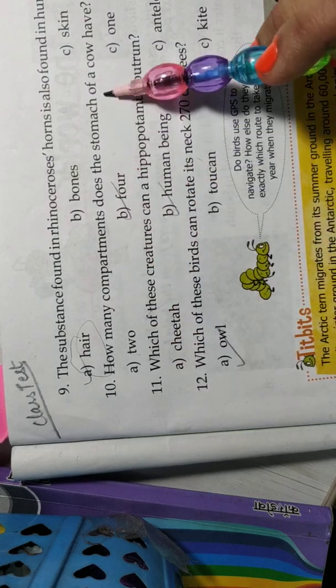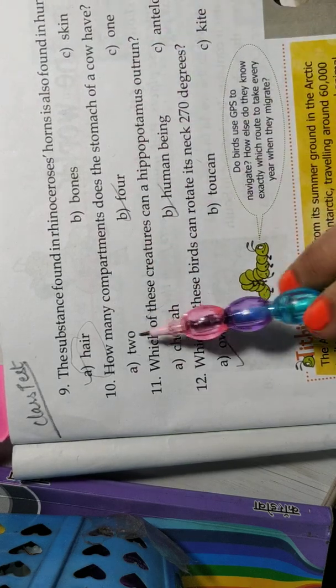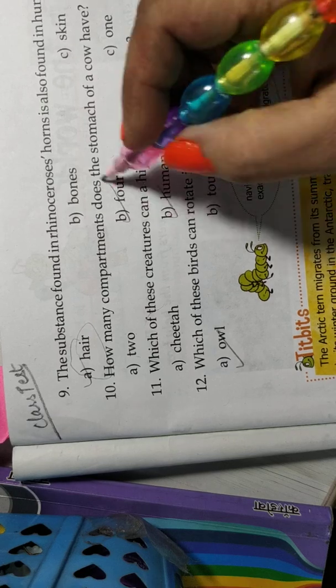Now, how many compartments does the stomach of cow have? Cow have two, four, one. Four is the correct answer.